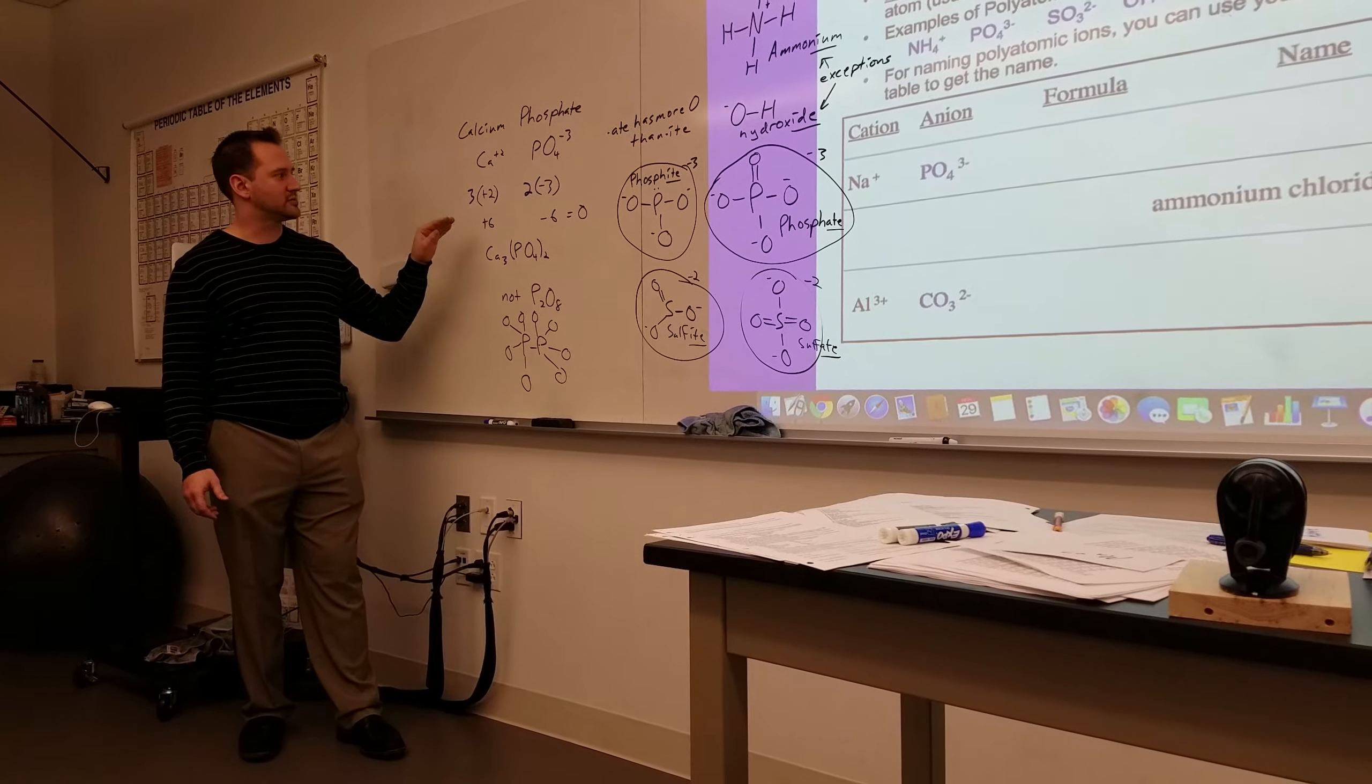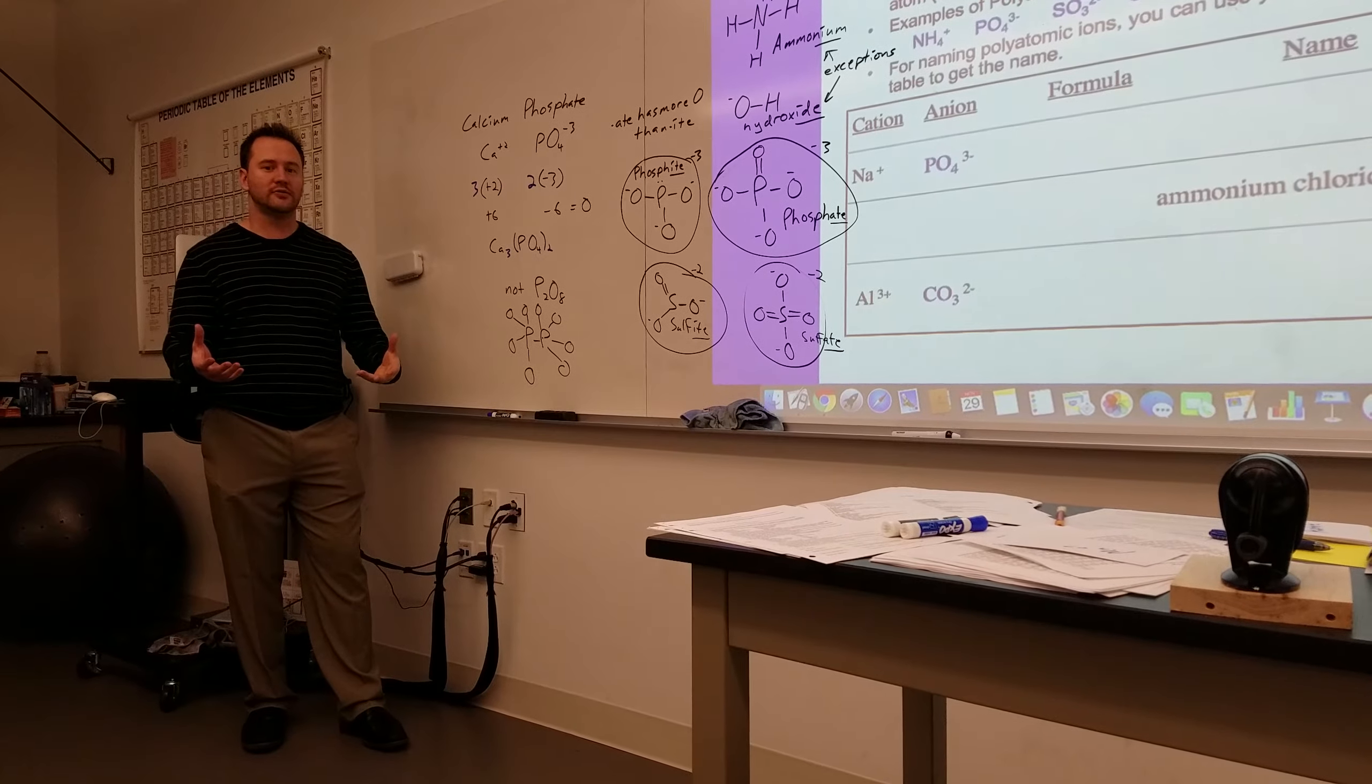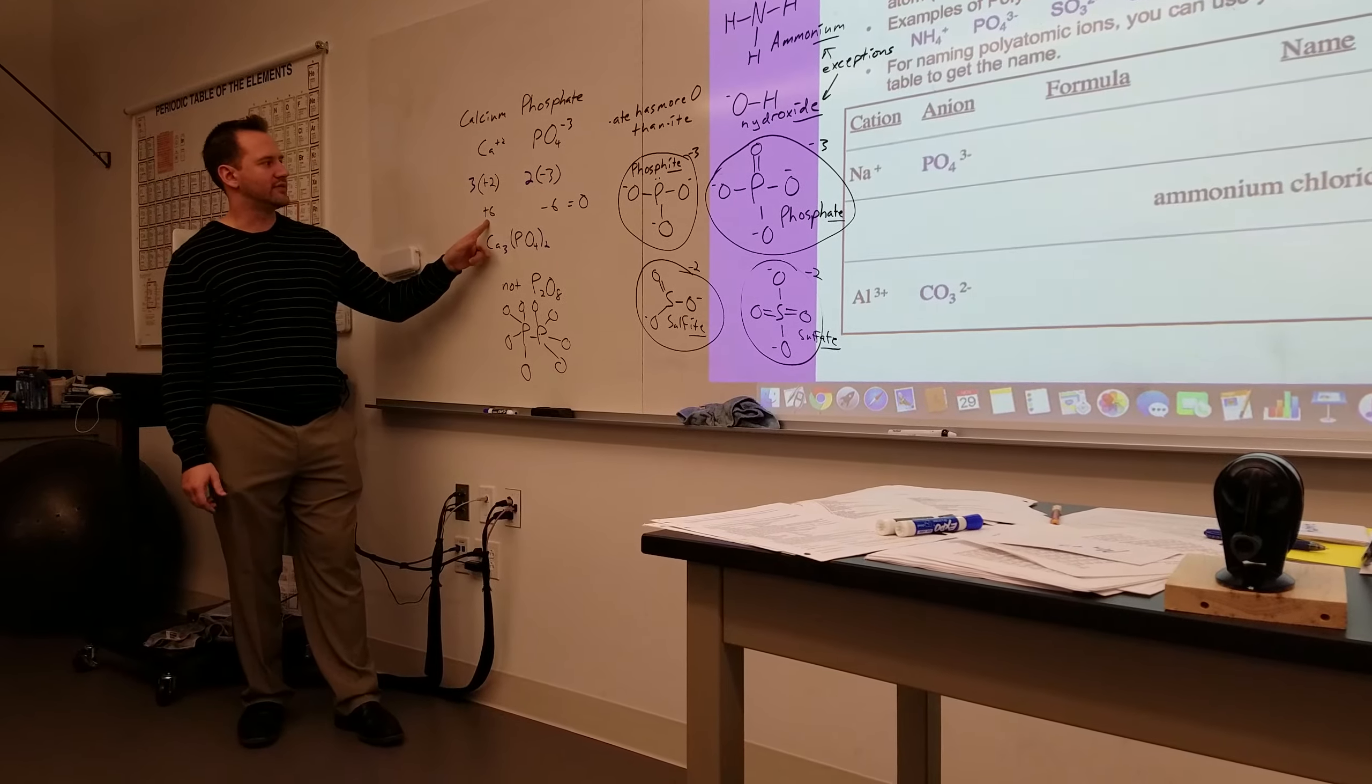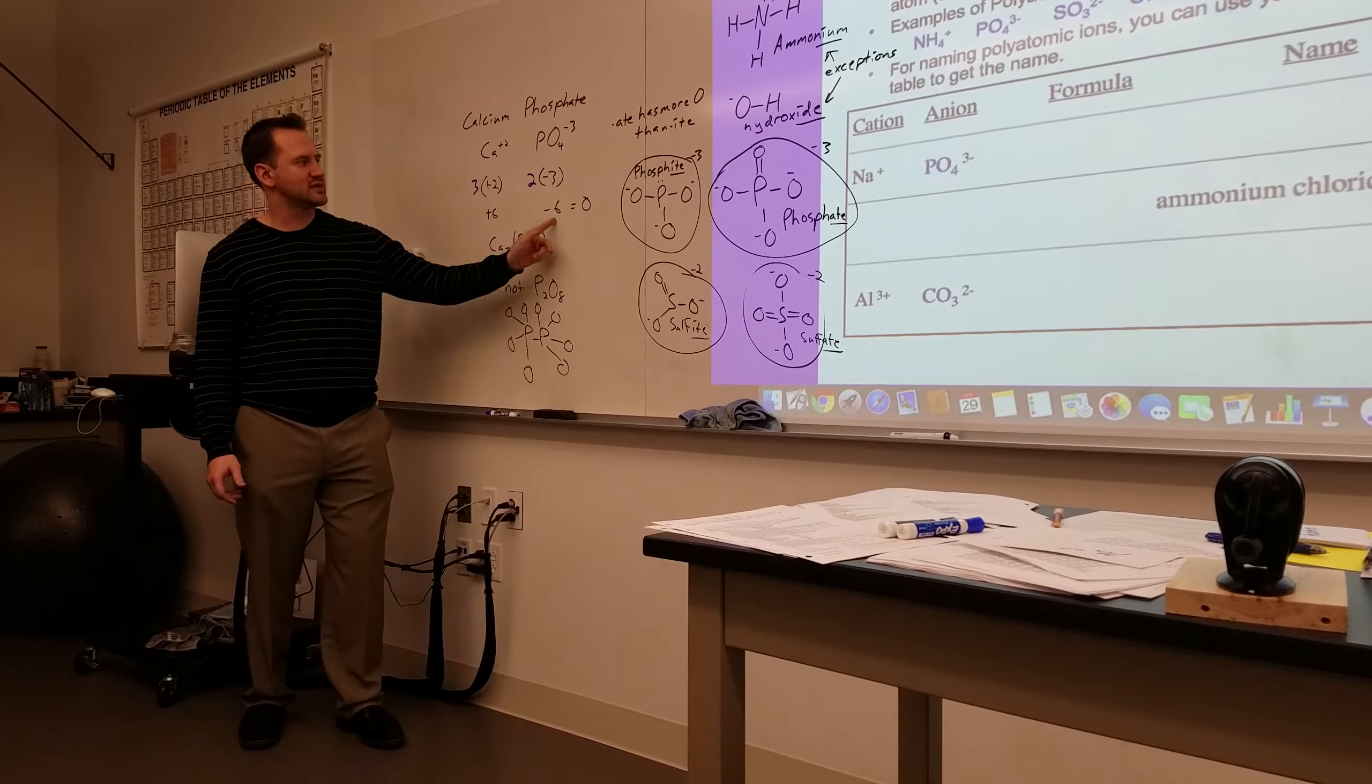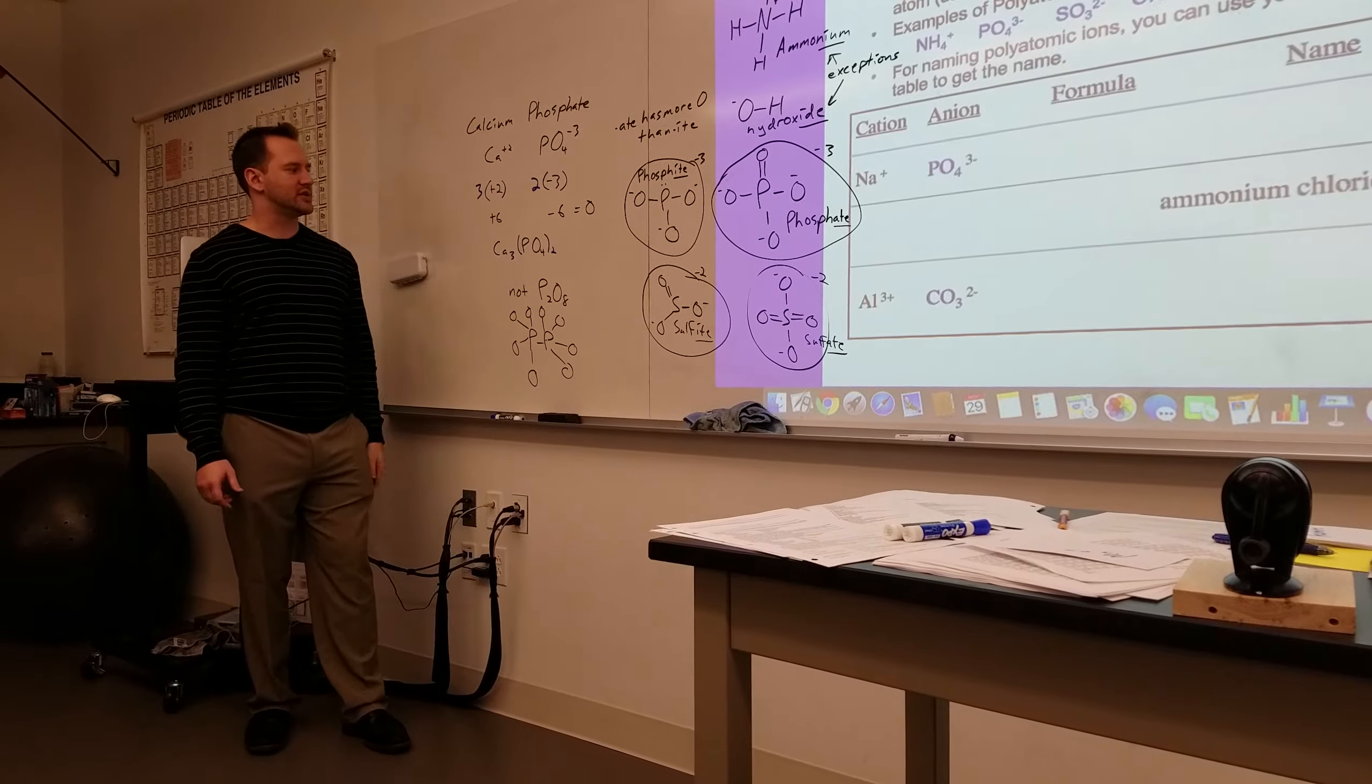You need the positive and negative charge to balance out. Calcium positive two, negative three. Lowest common product you can get between those two numbers is six. So you have to get the cation to positive six, anion to negative six. So I'm going to need three calciums and two phosphates to do that.